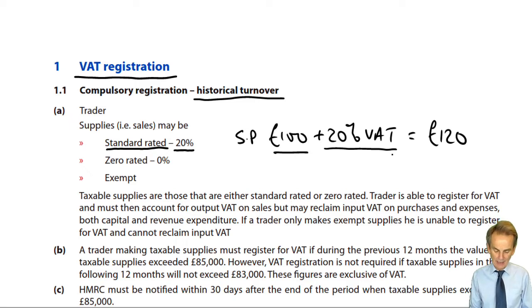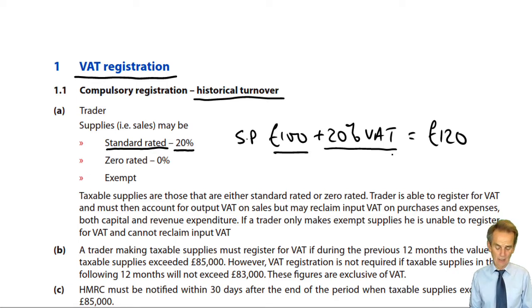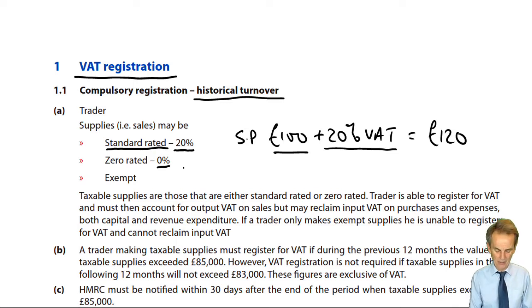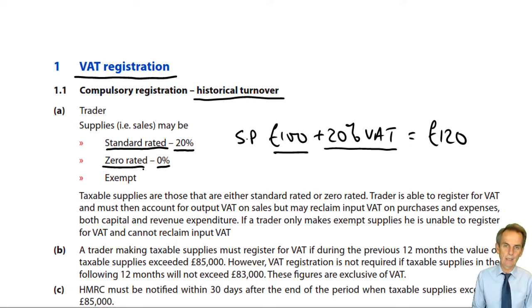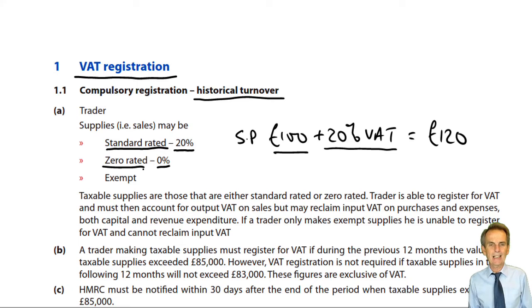Standard rated is the most likely type of taxable supply. We'll be talking a lot about taxable supplies. Strangely, we have another rate of VAT within our syllabus, and that's a very odd one — zero percent. It's zero rated supplies. You may well consider why on earth HMRC would classify certain sales as zero rated, where no VAT is charged at zero percent.